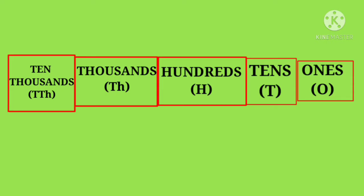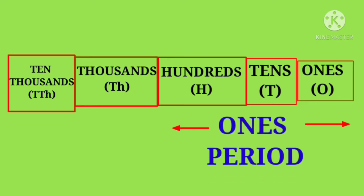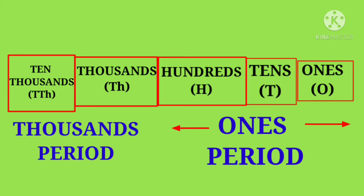In this chart we can see that there are 2 periods. The 1s period has 3 places: 1s, 10s, and 100s, followed by the 1000s period with the 1000s and 10,000s place, and they are separated by a comma.